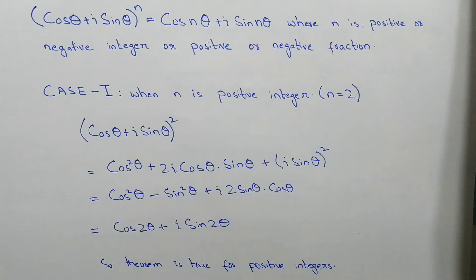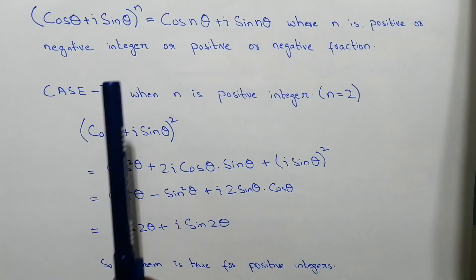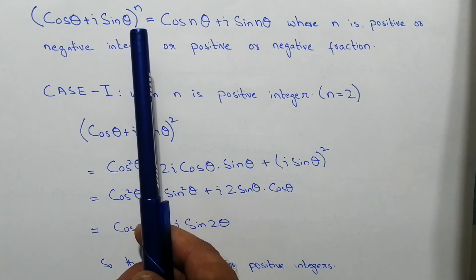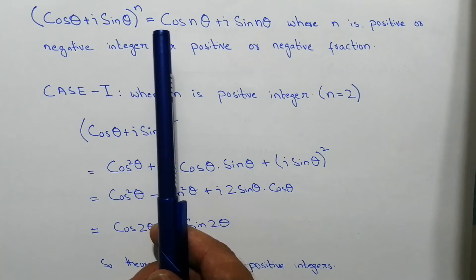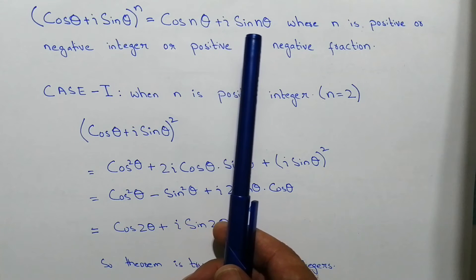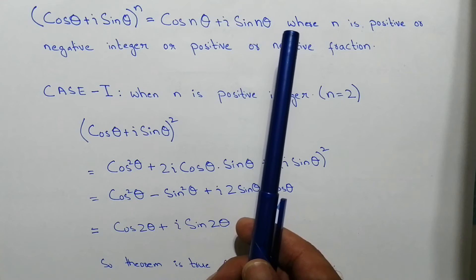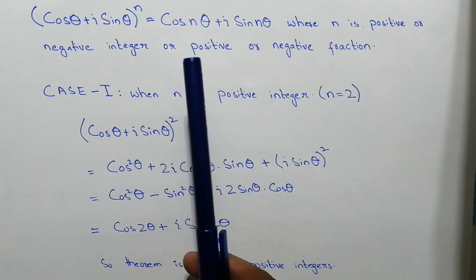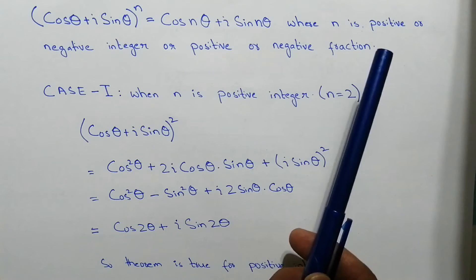Hello, what's up guys? Welcome to the new video. In this video we will learn about De Moivre's theorem. According to the statement, it says that (cos θ + i sin θ)^n is equal to cos nθ + i sin nθ, where n is a positive or negative integer or positive or negative fraction.